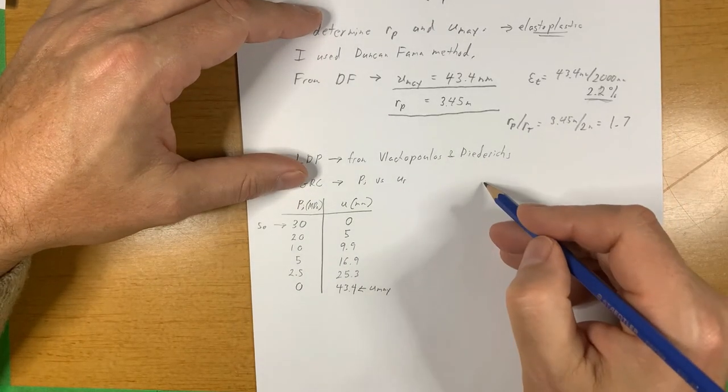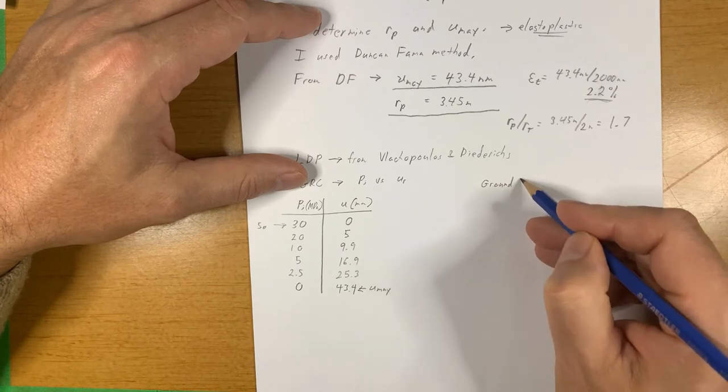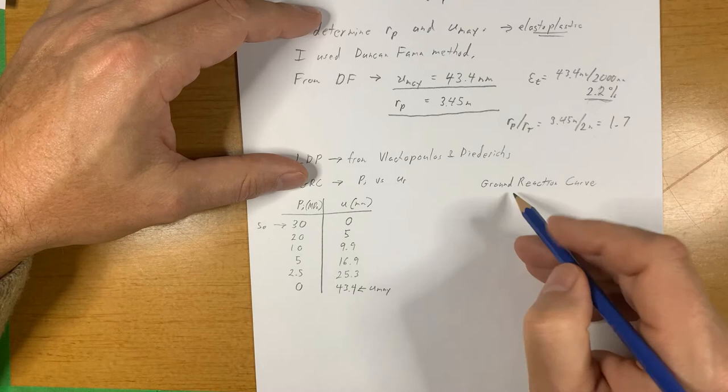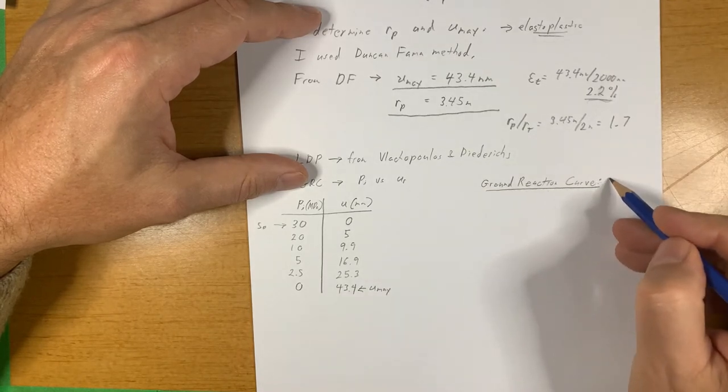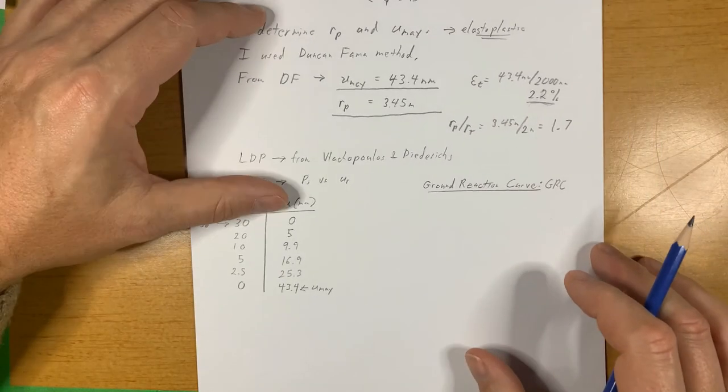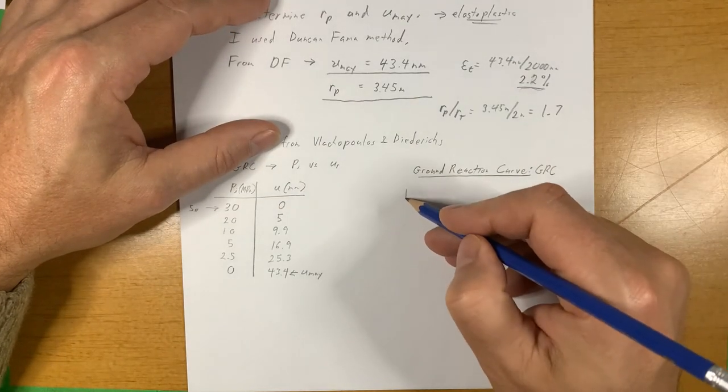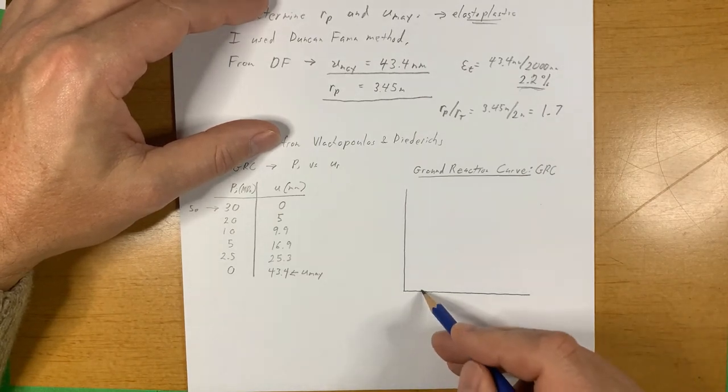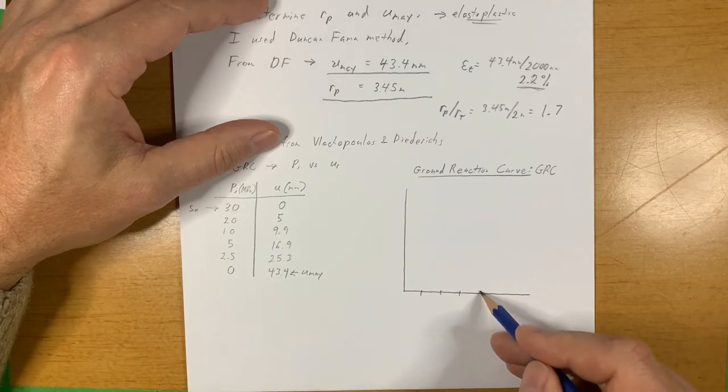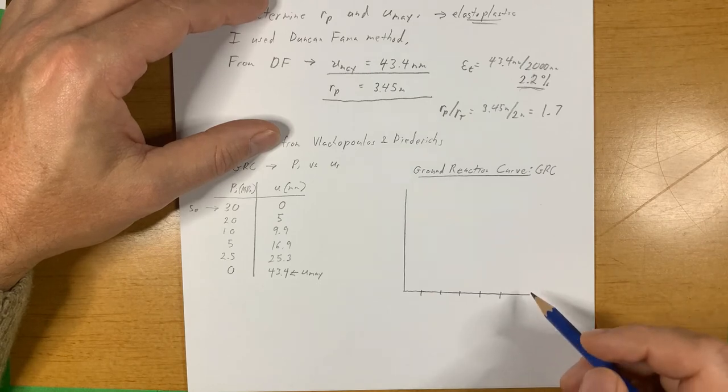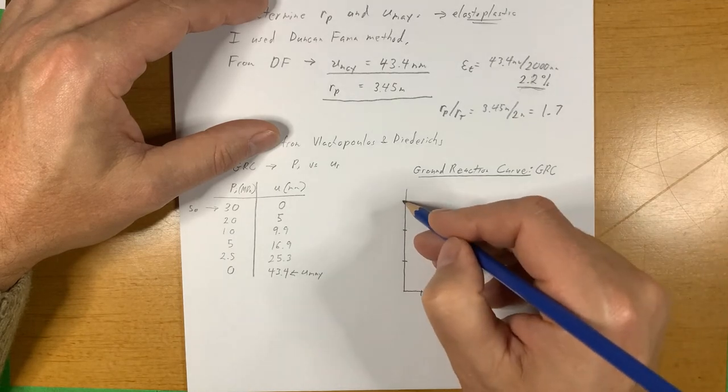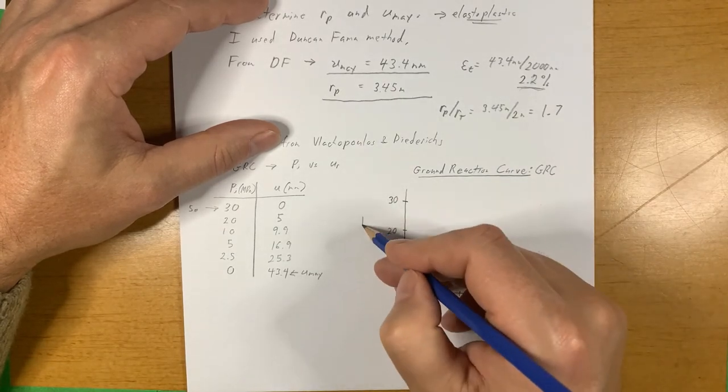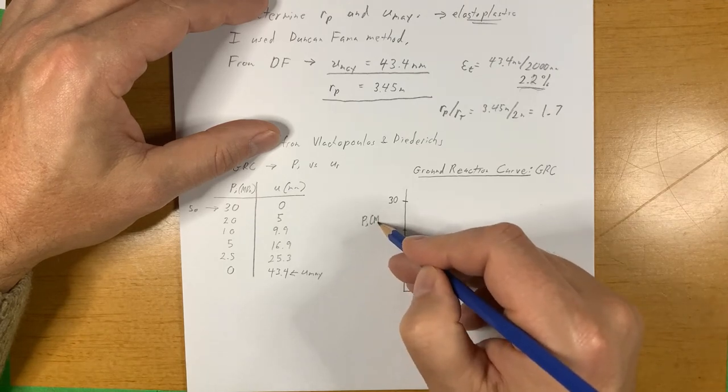So now we want to make a ground reaction curve with that. We're going to plot that up. This might be a bit crude, but I'm going to do my best. We're going to go 10, 20, 30, 40, 50 millimeters and then we're going to go 10, 20, 30 MPa.